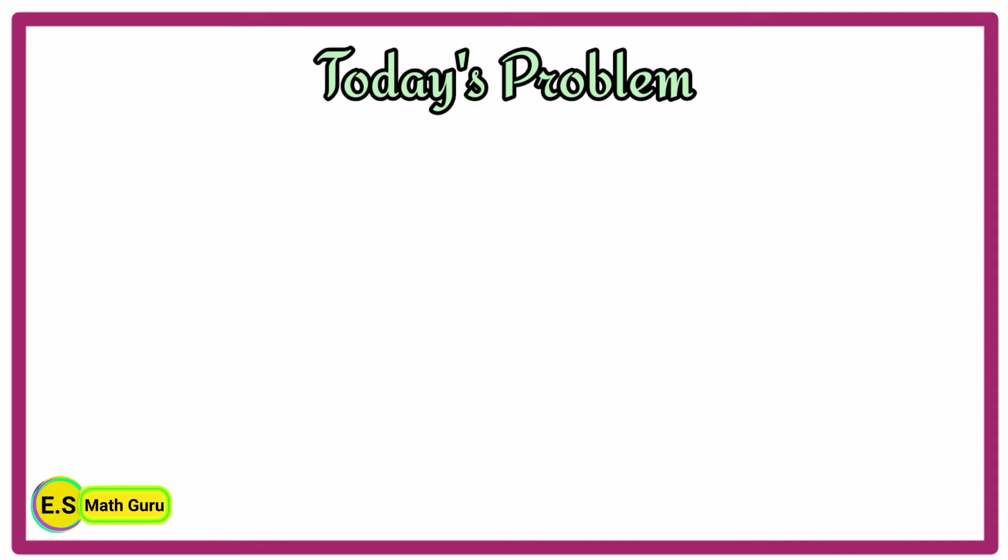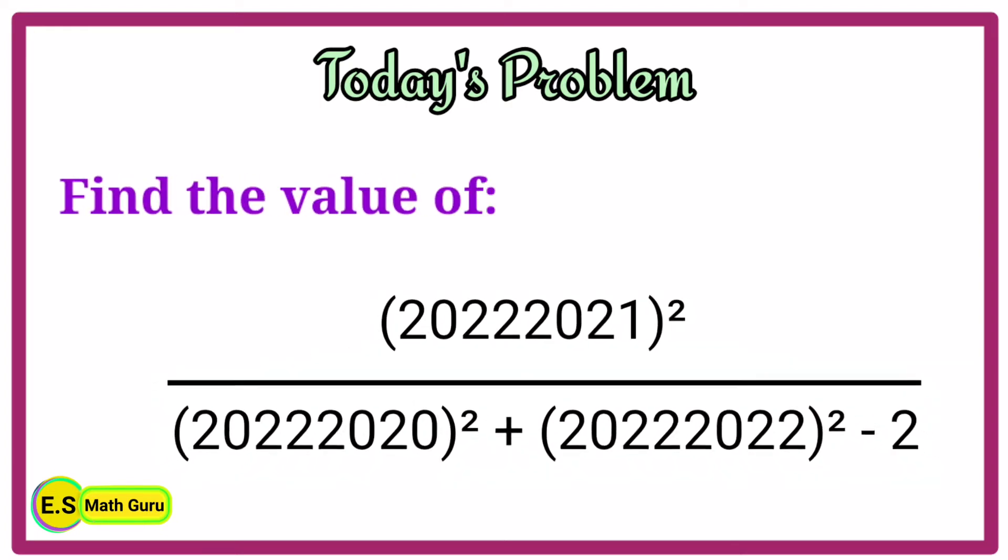Let us see what that is and how to solve it. Find the value of 20222021 squared divided by 20222020 squared plus 20222022 squared minus 2.